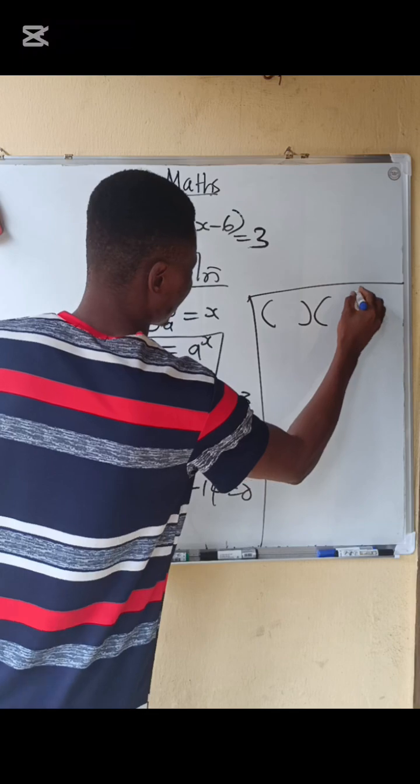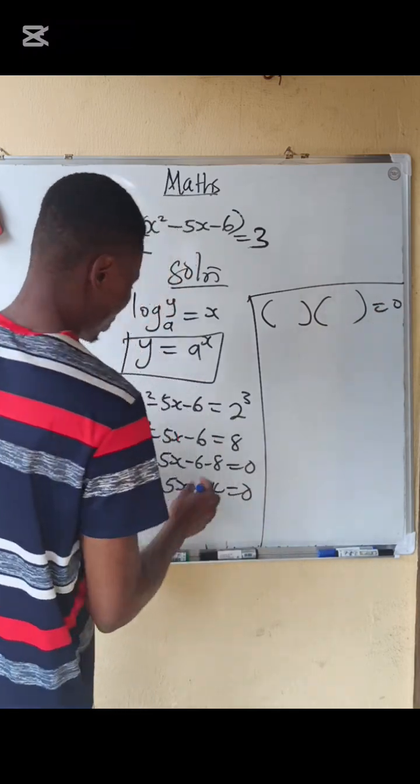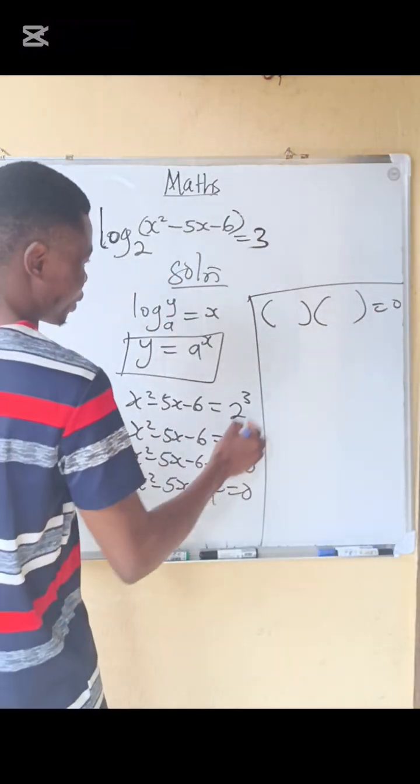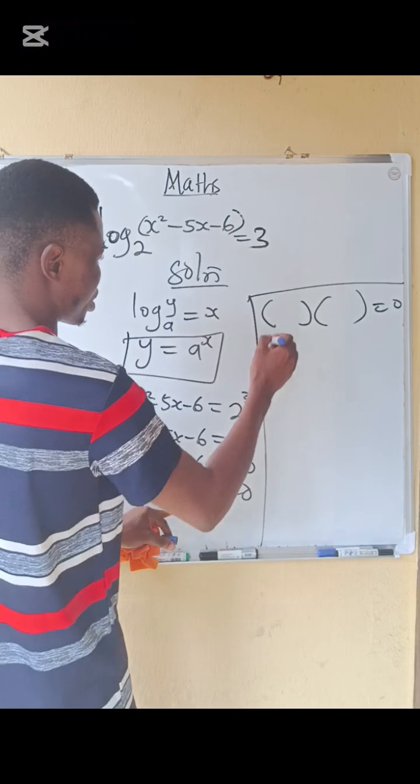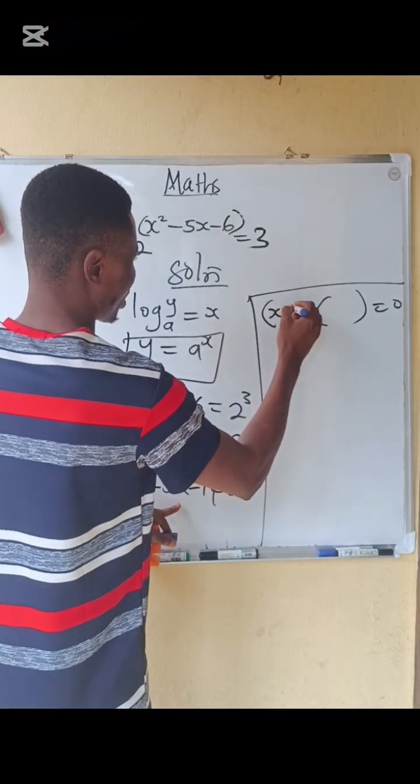So what do you do? The factors over here that would be x minus 7 and x plus 2.